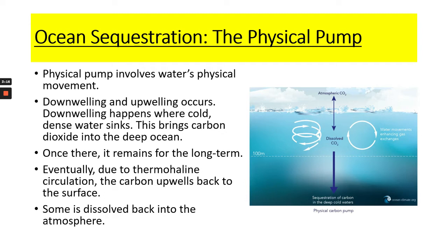We have downwelling and upwelling in the ocean — water shifting downwards and upwards due to currents. Downwelling happens where there is cold, dense water. Just like cold air sinks, cold water also sinks, and downwelling therefore brings carbon dioxide into the deep ocean. We're not talking about phytoplankton or zooplankton here — this is simply the water itself. Once carbon is in the deep ocean, it remains there for a long time. Eventually, due to thermohaline circulation, different warm and cold ocean currents move the carbon back up to the ocean surface through upwelling.